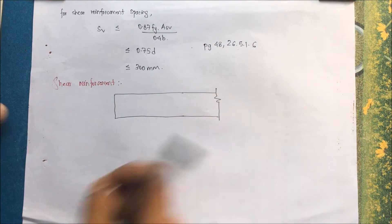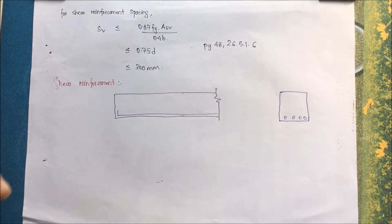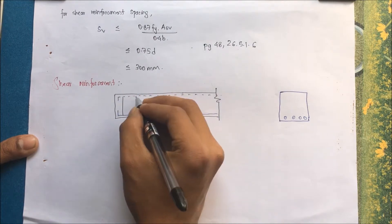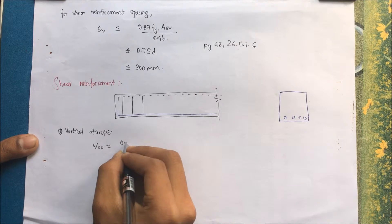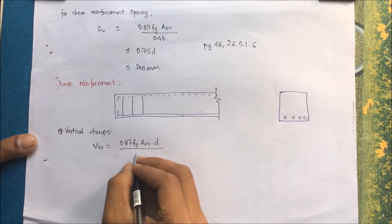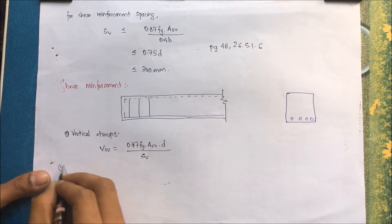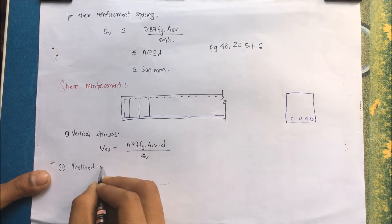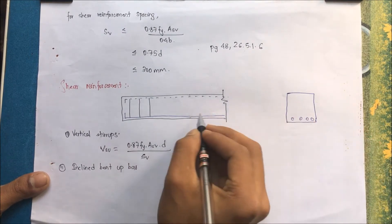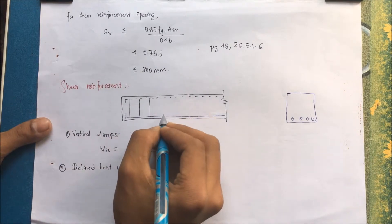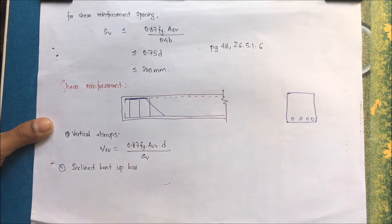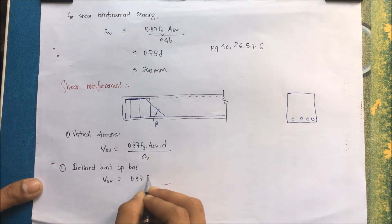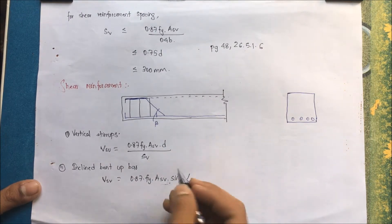Drawing the reinforcement detailing: the horizontal or longitudinal reinforcement and vertical stirrups are shown. For vertical stirrups, Vvs = 0.87 × fy × Asv × d divided by Sv. Another type of shear reinforcement is the inclined bent-up bar — the longitudinal bar may be bent up at some angle alpha, and this also contributes to shear resistance.